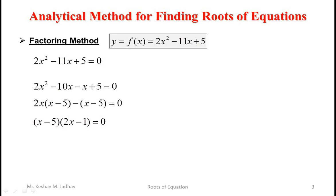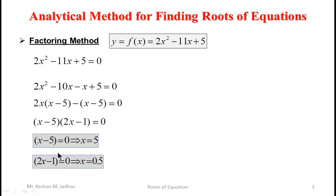So either x minus 5 equals 0 or 2x minus 1 equals 0. If x minus 5 equals 0 then x equals 5, and if 2x minus 1 equals 0 then x equals 1/2, which is 0.5. So x equal to 5 and x equal to 0.5 are the roots of this given equation.